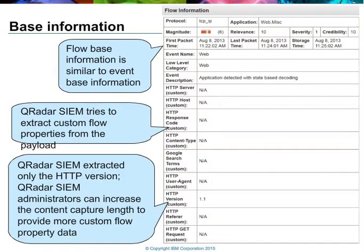Like we normalize event records into a common log file format, we also do this with flow information. The network event record provides you a nice summary view of a flow. You'll see at the top which protocol was seen, which application was observed and matched, the overall magnitude associated with the flow record, as well as information about the first time we saw packets associated with this flow.